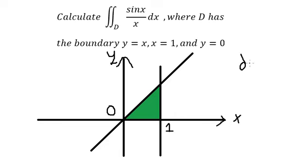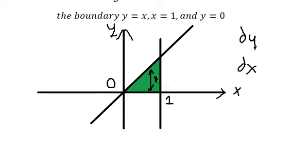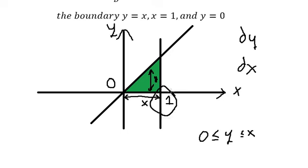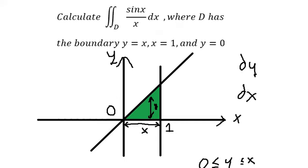We need to analyze dy and dx. We have y equal to s. We can see that y is less than s and y is greater than zero. So the boundary of y should be from zero to s. For s, we can see that s is between zero and one, so the boundary of s should be from zero to one. After analyzing the figure, we can now set up the boundary of the integral.